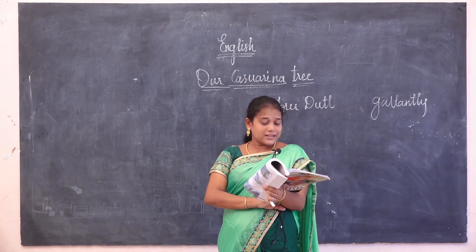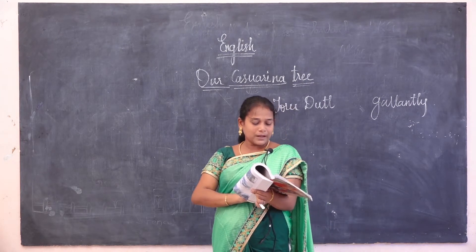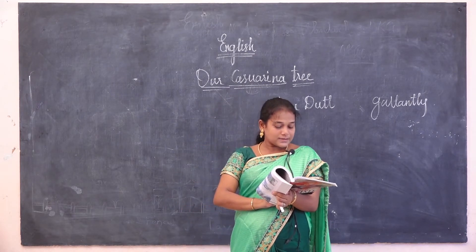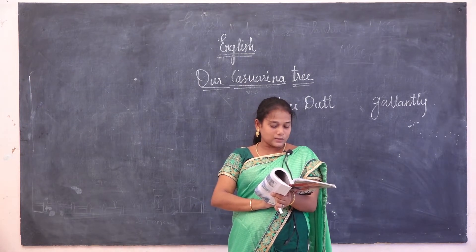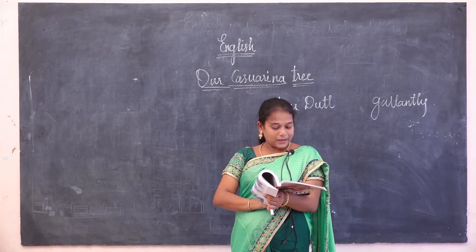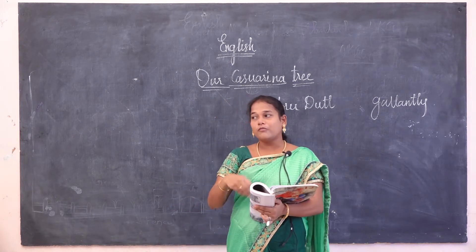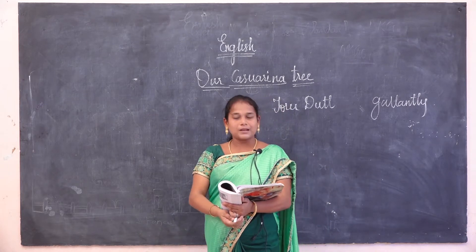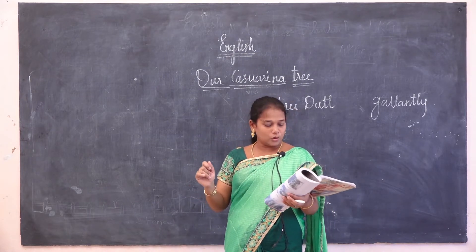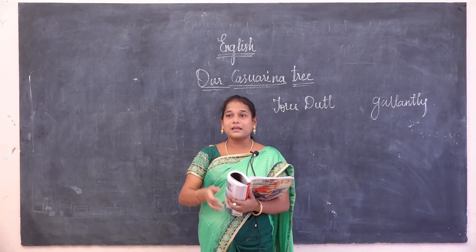'When first my casement is wide open thrown at dawn, my eyes delighted to rest upon it.' Casement means a big window in the hall or bedroom. When the author opens the casement — the big window — at dawn, which represents the early sunrise, her eyes are delighted to see the tree. 'Delighted' means it makes her very happy.